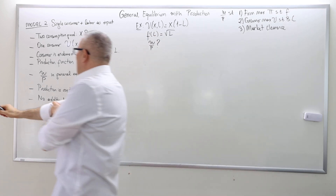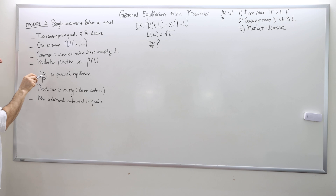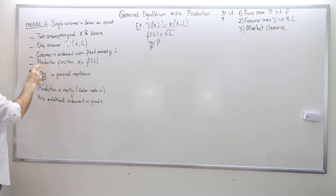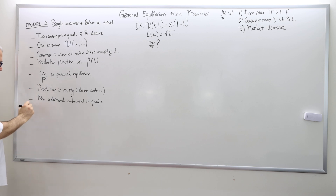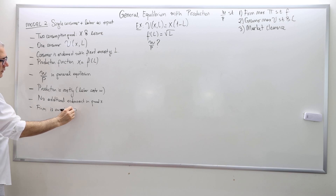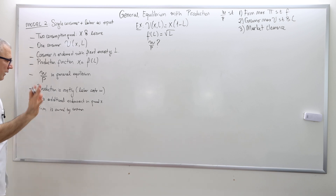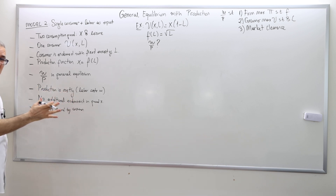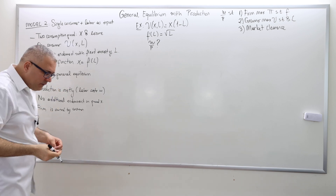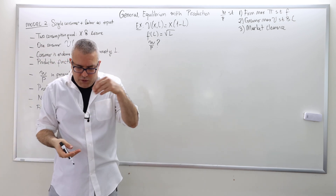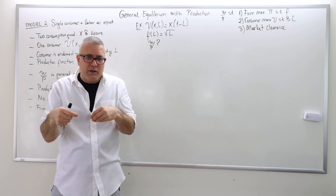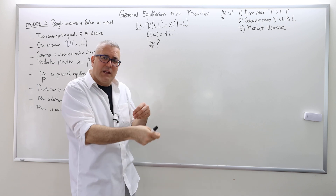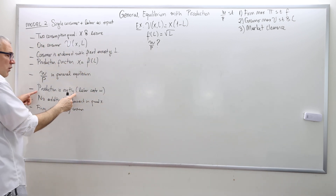The question we will be answering is: W is the price for labor, so it's the wage; P is the price for good X. In general equilibrium, what would be the price ratio? The firm is owned by the consumer. The production is costly because the inputs you use are sold in the market — labor with a wage W — so you have to pay that price to hire labor. Therefore, there is no additional endowment on good X; there's only a fixed amount of endowment for labor.